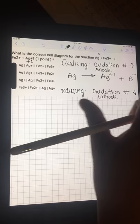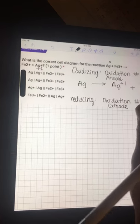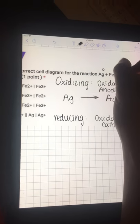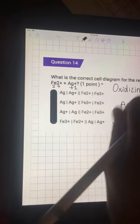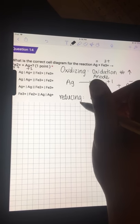Now we need to find our reducing agent. For the reductant, the oxidation number is going to decrease. We have Fe going from 3+ to 2+, so it's going from 3 to 2. That means it's decreasing, so this is our reducing agent.